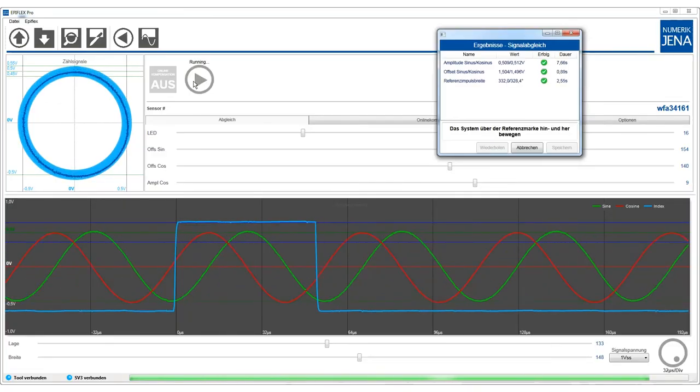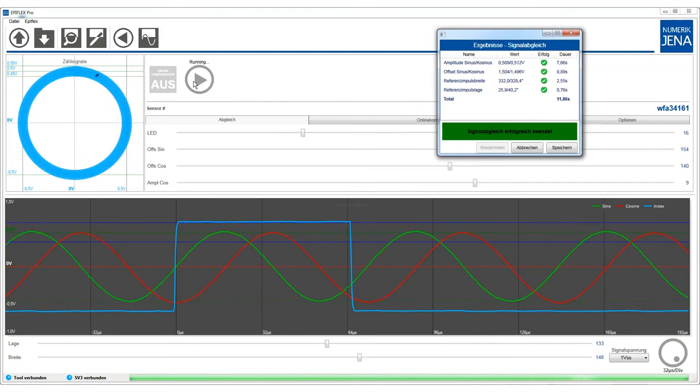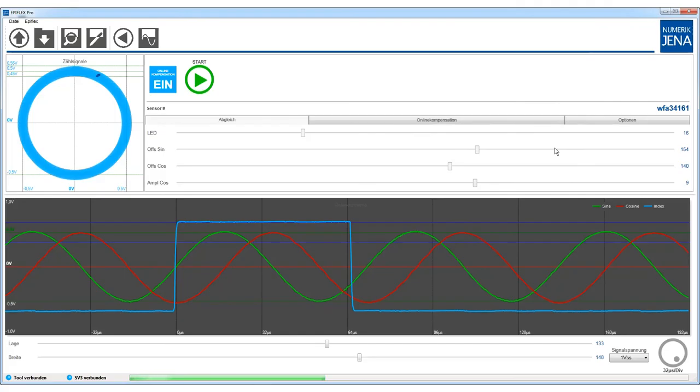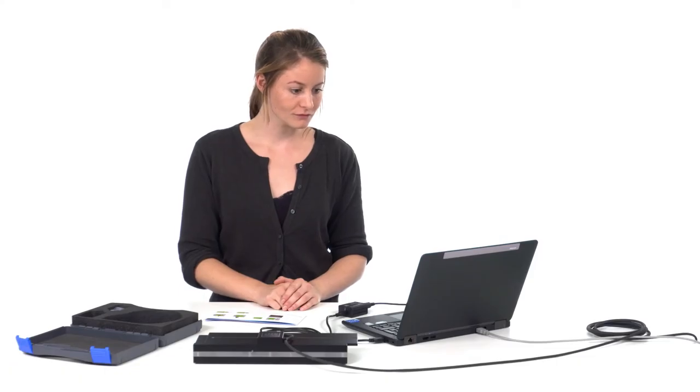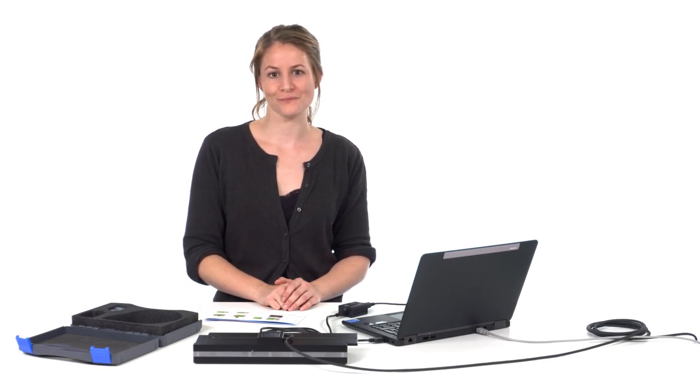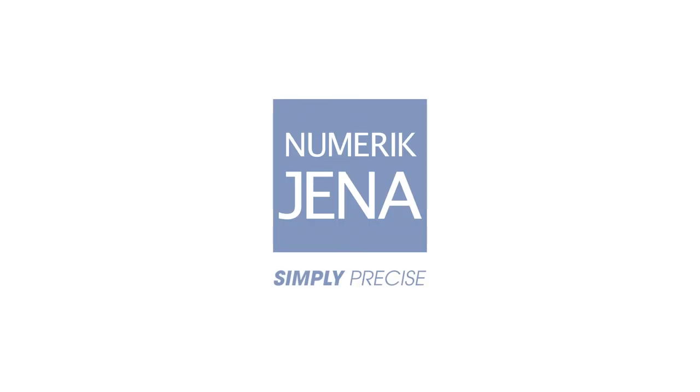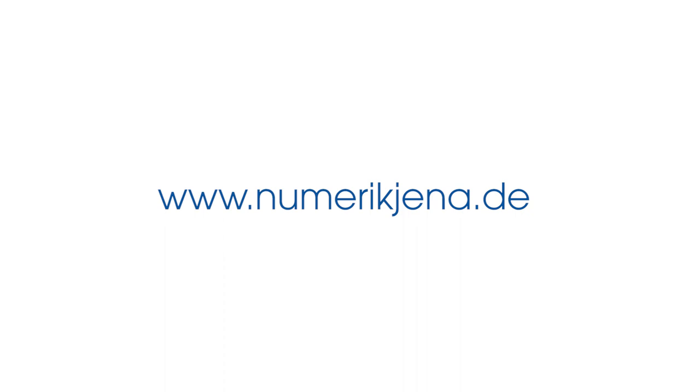When the adjustment is finished successfully, you only have to save the new sensor parameters and the measuring system is ready for operation. All right, Laina, are you surprised? You have just installed an optical measuring system which is able to measure in the nanometer range and put it into operation. All that without any special training or experience. That's how easy it is to use the measuring system from Numeric Jena.